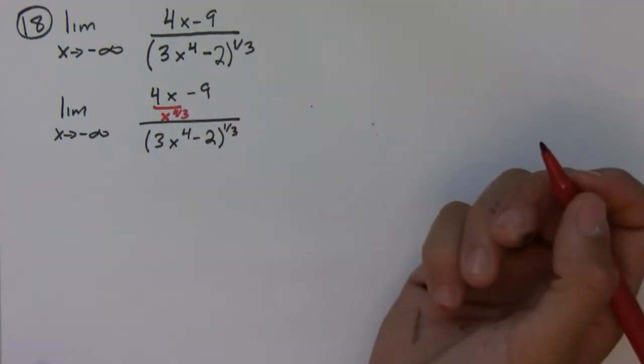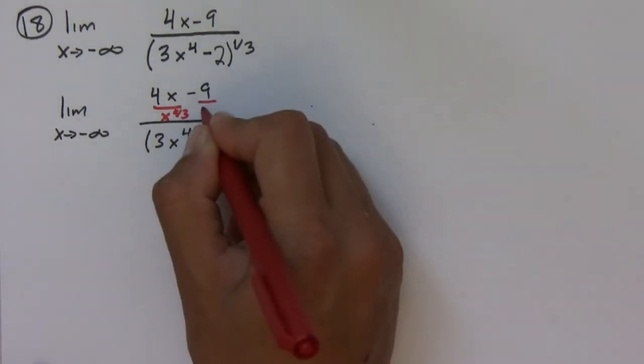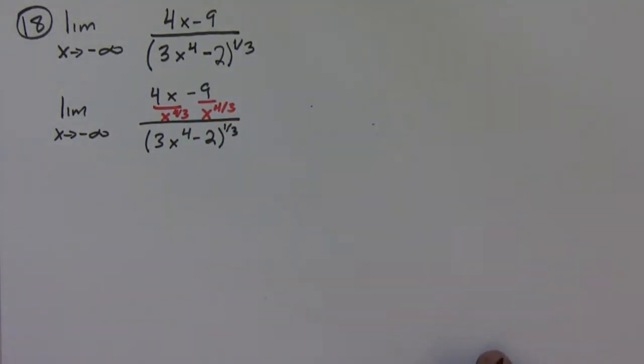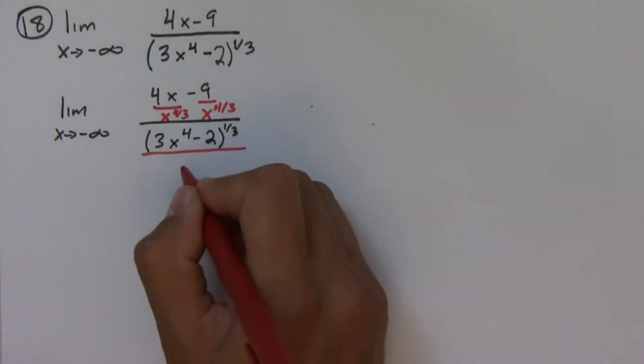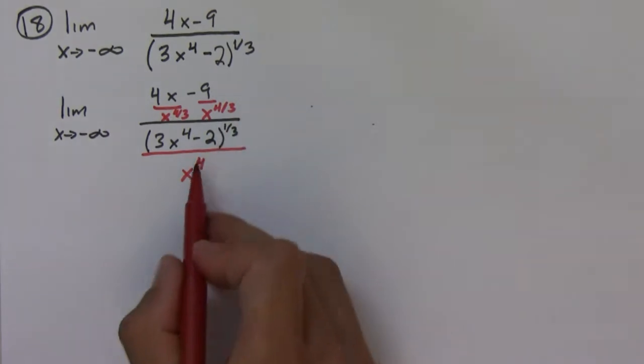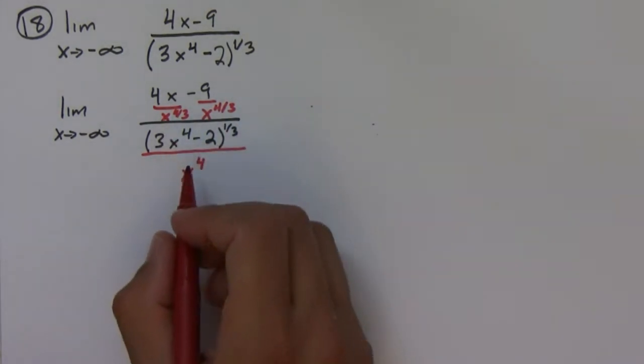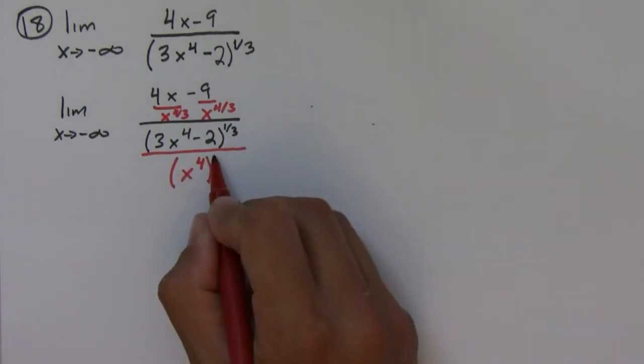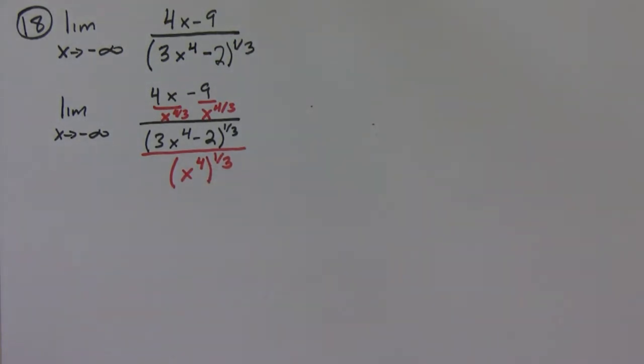Divided by x to the four-thirds. I'm going to write this one a little bit differently to save myself a step. Instead of writing it as x to the four-thirds, I'm going to write it as x to the fourth raised to the one-third. This is the same by the laws of exponents.